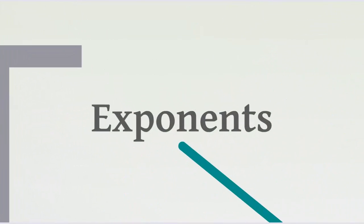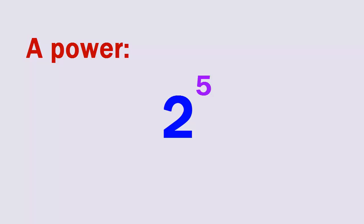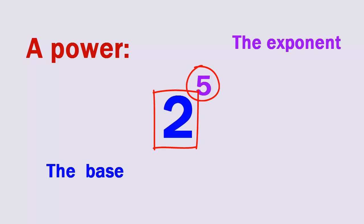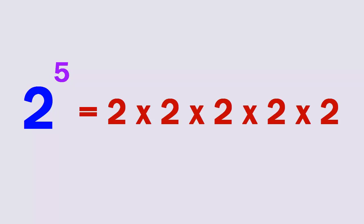We'll begin with exponents. A power has two parts, a base and an exponent. A power is used to represent a number multiplied by itself many times.